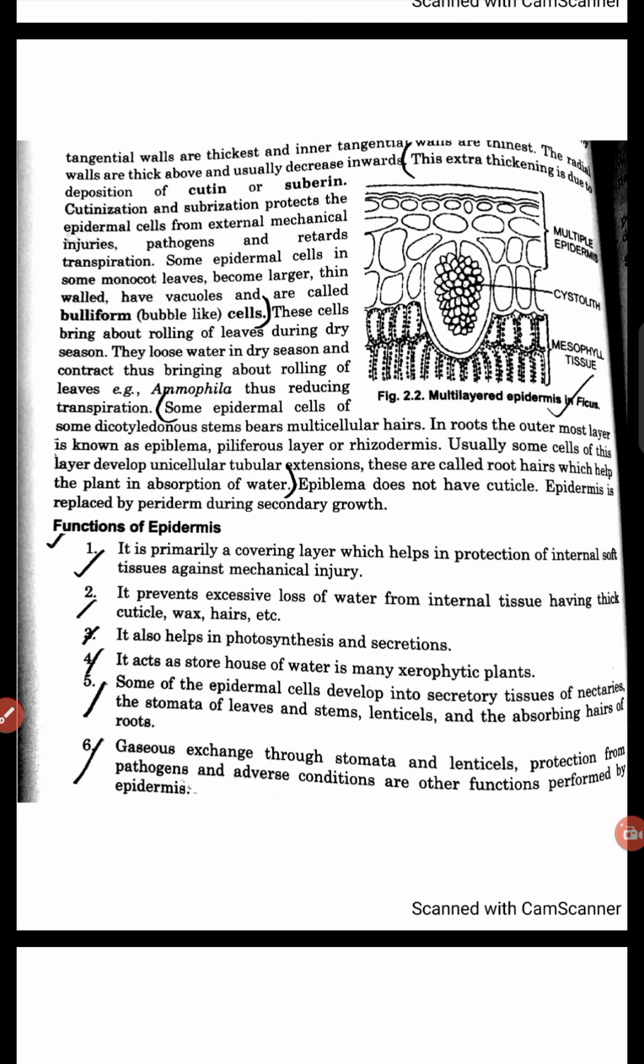So that water is not lost from the plant body. Fifth, some epidermal cells can develop into secretory tissues like nectaries which help in pollination, and other cells can be converted into lenticels and root hairs.